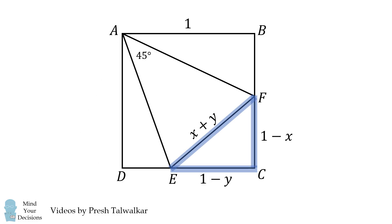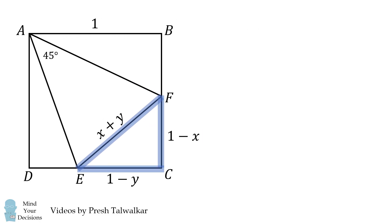Now let's consider the perimeter of triangle ECF. It'll be equal to (1-y) + (1-x) + (x+y). We can cancel out the y's and cancel out the x's, and we're left with 1+1, and that's exactly equal to 2, which is what we saw in the numerical approach. Amazing!